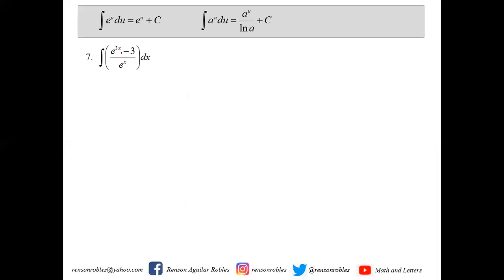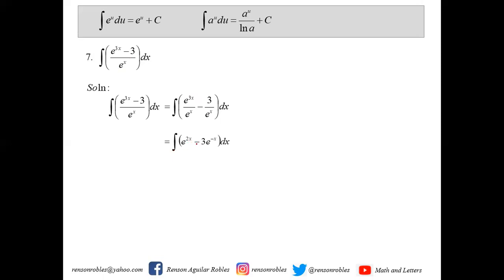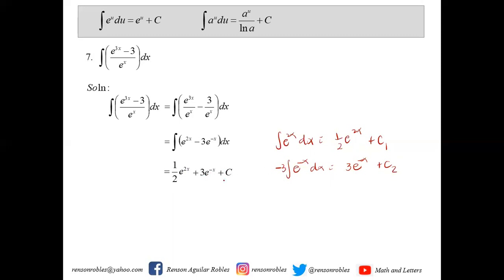We have the integral of e raised to 3x minus 3 all over e to the x dx. To simplify by applying the distributive property of division over addition, we introduce e to the x to each term in the numerator. We get the integral of e to the 3x over e to the x minus 3 over e to the x dx. Applying the laws of exponents by subtracting powers, we have the integral of e raised to 2x minus 3e raised to negative x dx. The integral of e raised to 2x dx is 1 half e to the 2x, and the integral of negative 3e to the negative x dx is positive 3e raised to negative x. Finally, we have 1 half e to the 2x plus 3e raised to negative x plus c.